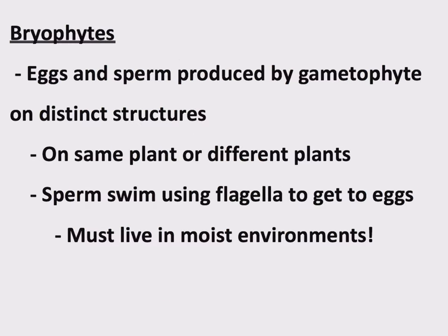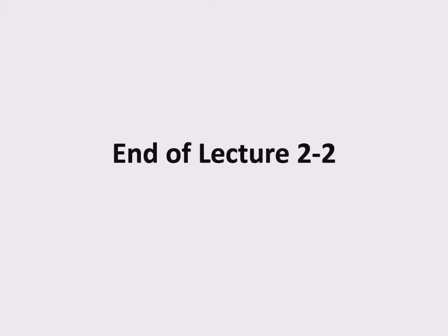These are land plants, but they're the most primitive land plants — not the best at it yet. They can survive outside of water, but because these sperm need to swim using flagella to get to eggs, they can only live in moist environments, in environments where it rains a lot and there's water around for this swimming to happen. This is typically where I run out of time in this lecture. We'll continue on with bryophytes and other more sophisticated plants next time. This is the end of Recorded Lecture 2-2.